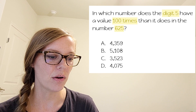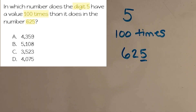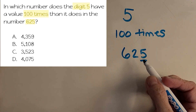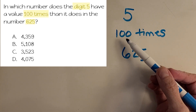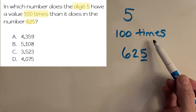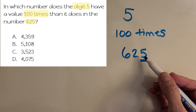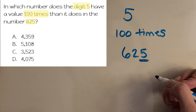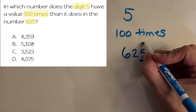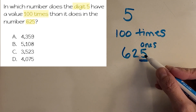Now I'm going to start working through the problem on the whiteboard. Let's look at the important parts. We're looking at the digit 5, and we want a number that is 100 times the value of that 5 in 625. What I like to think about first is: what place is that 5 in? It's in the ones place. So that's just worth 5 — think of 5 ones as just 5.